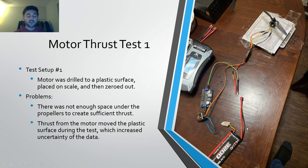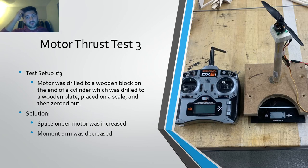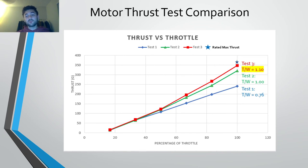When the motors first came in, we wanted to test what kind of max thrust we would be getting, so we constructed three motor tests. On the first test, we screwed it into a plastic surface, and the problem with this, there wasn't enough space underneath the motor to create enough thrust. Along with this, it was very unstable during the testing. To fix the space under the motor, we attached it to the end of a plunger, but it was still too unstable, and it was moving off centerline during the test. To fix this, we drilled the plunger into a wooden plate, and that helped with stability and fixed the problem where there wasn't enough space underneath the motor.